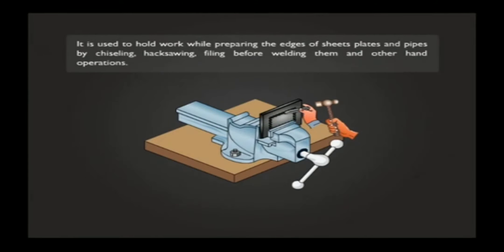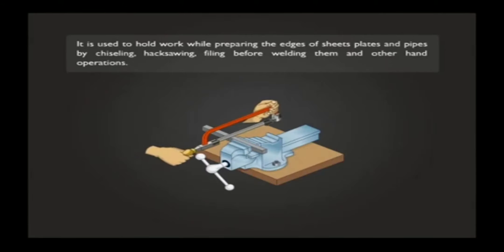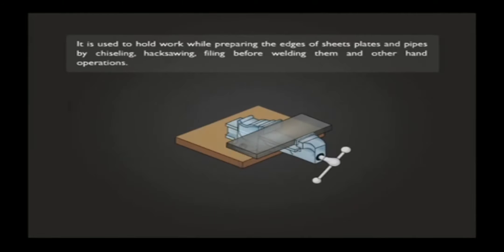A bench vise is made of cast iron or cast steel. It is used to hold work while preparing the edges of sheet plates and pipes by chiseling, hacksawing, filing before welding them and other hand operations.